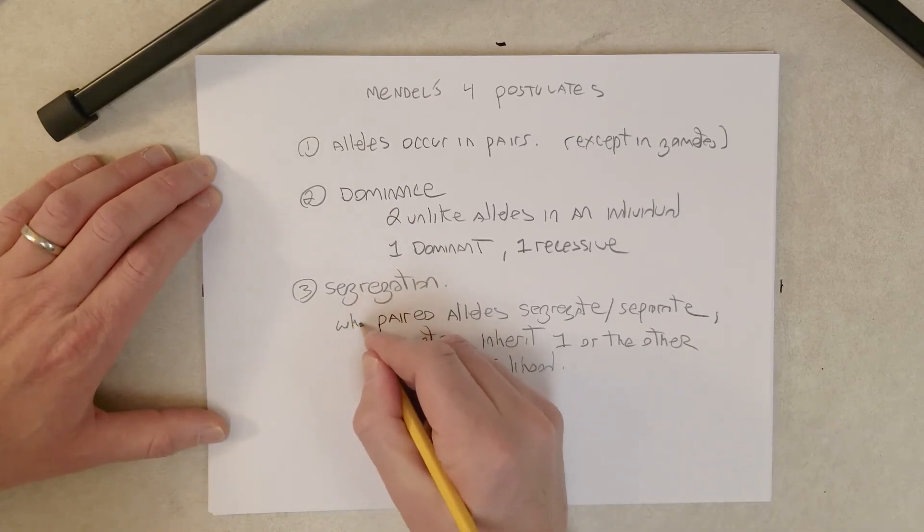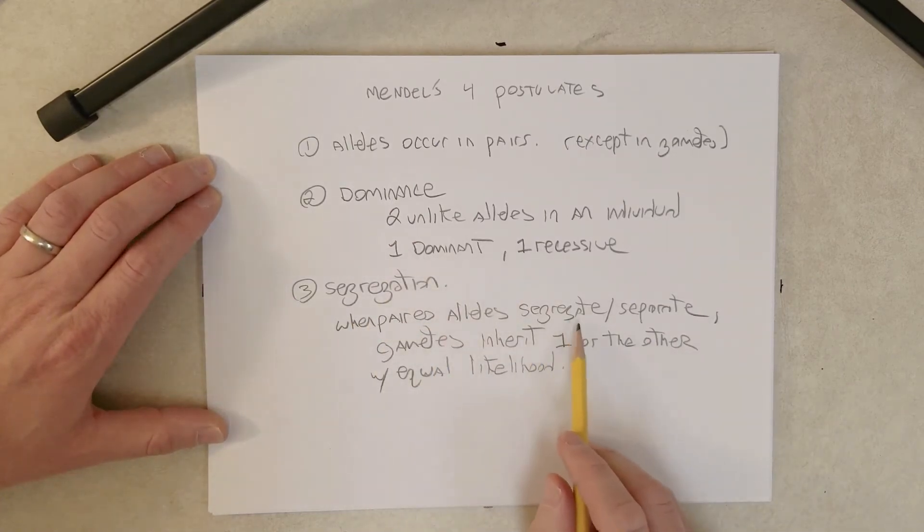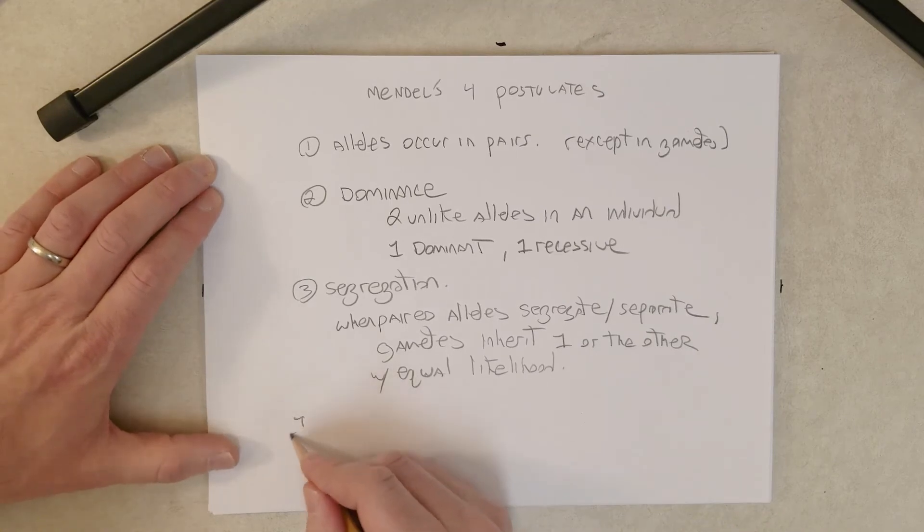So how about this? When paired alleles segregate or separate, gametes inherit one or the other with equal likelihood. And then finally, a postulate on independent assortment.